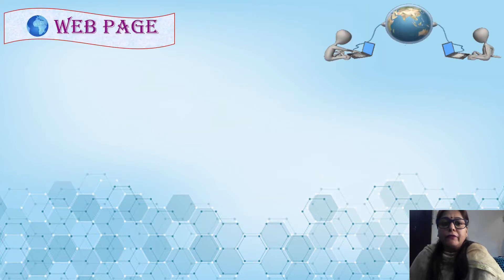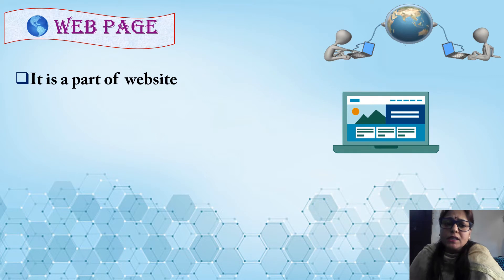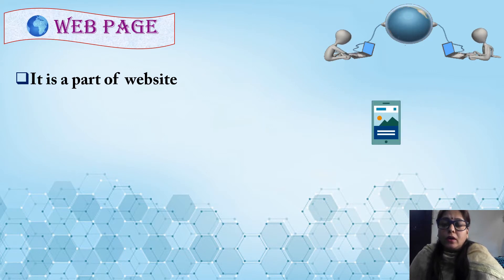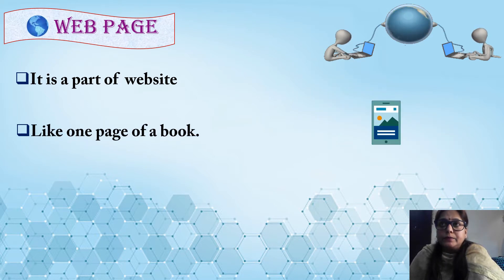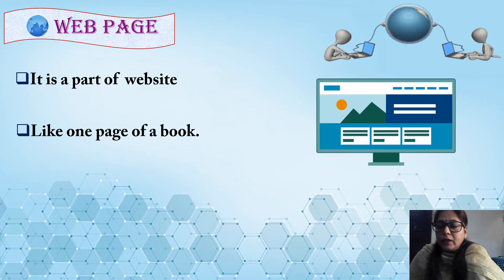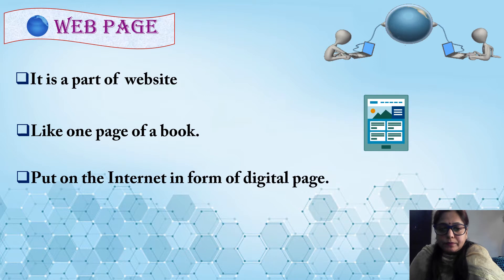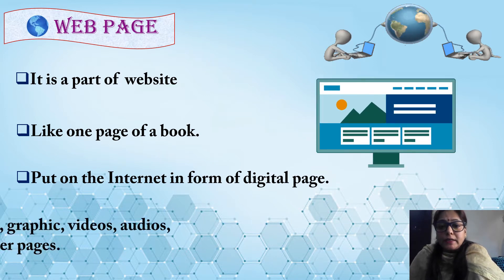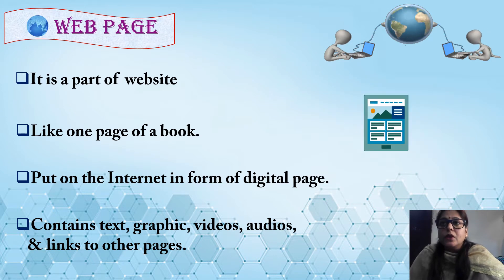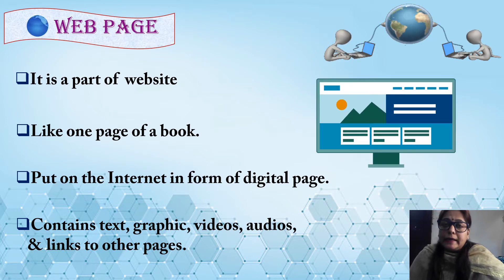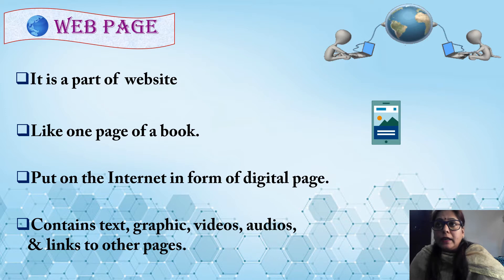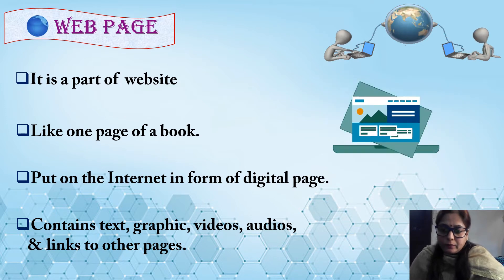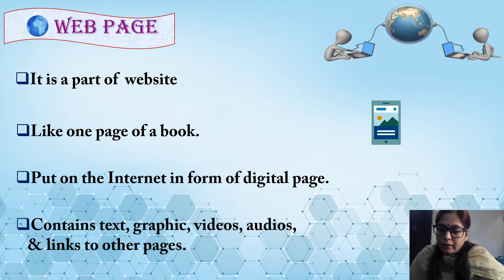Our next term is web page. A web page is a part of a website, like a page of a book. It is put on the internet in the form of digital pages. A web page contains text, graphics, videos, audios, and links to other pages of a website, and it provides us information in any of these forms. This is called a web page.